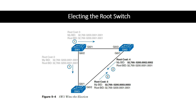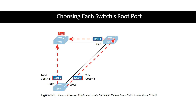With building an actual spanning tree in its own layer two topology, the next thing we need to do is step two: on each switch that is not the root, elect the root port. There can only be one root port per switch. A switch chooses its root port based on the least cost to reach the root switch.